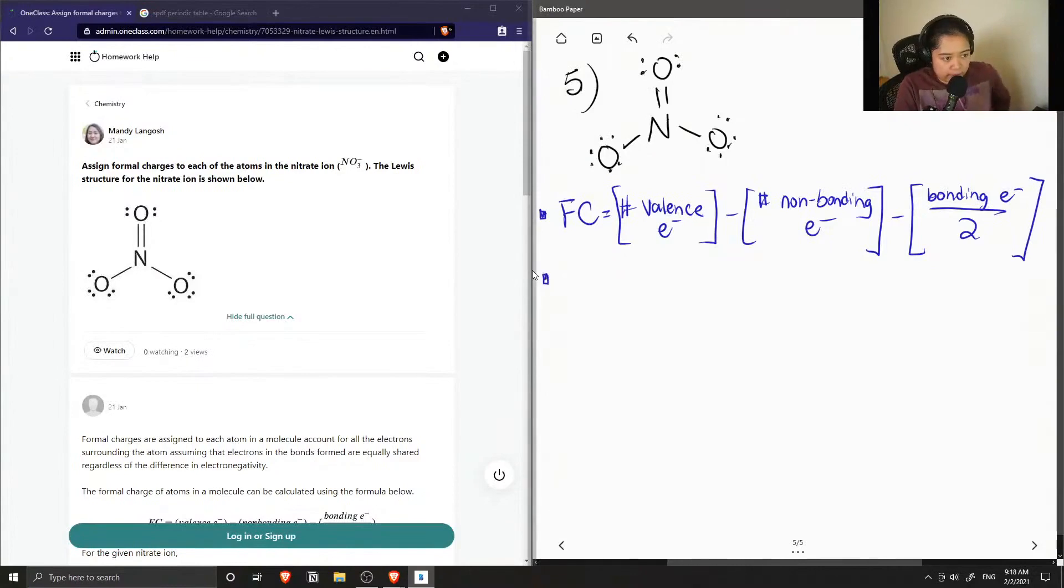Let's start off by calculating the formal charge of our double bonded oxygen. So oxygen double is equal to - every oxygen has six valence electrons and the number of lone pairs on this oxygen is only four. Since there's a double bond to the oxygen, we have four bonding electrons in total divided by two. Six minus four minus two is zero, so we know that our double bonded oxygen will not carry any of the charges.